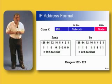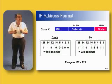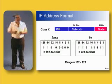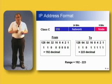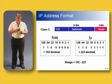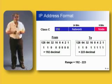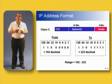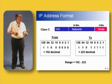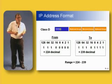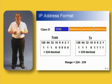Same thing with a class C. Remember, the first three bits are set in stone: one-one-zero. So that gives us a possible range from one-one-zero followed by five zeros, all the way up to one-one-zero followed by five ones. Converting back into decimal, we get a range from 192 to 223.